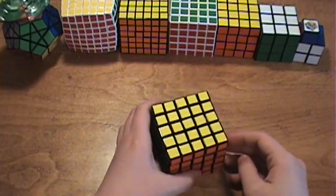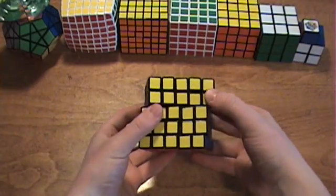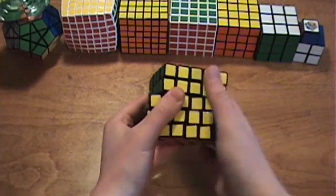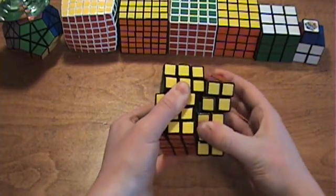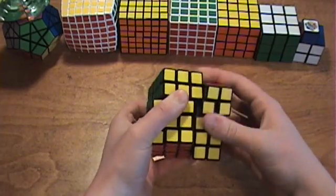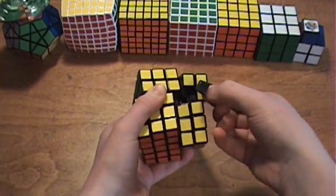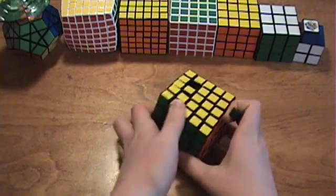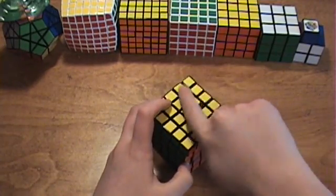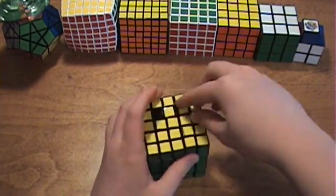Now another way you can try taking it apart is moving these two layers forward and then bringing these two down. This opens up a gap and it might make it a little easier to pull out this edge piece. But nonetheless, you can either push it out or misalign the layers. It doesn't matter.